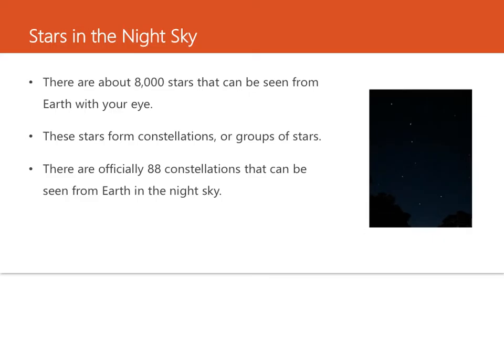There are many stars in the universe, one of which is the sun — so the sun is actually a star. There are about 8,000 stars that can be seen from the earth with your eye. These stars form constellations, or groups of stars. There are officially 88 constellations that can be seen from earth in the night sky. This photo shows the constellation known as the Big Dipper — here's the handle and here's the pot.